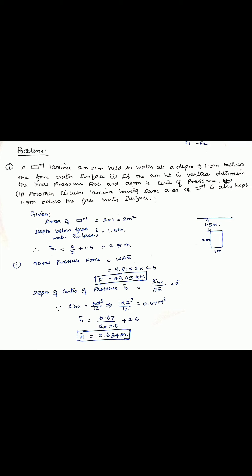First problem: a rectangular lamina 2 meter by 1 meter is held in water at a depth of 1.5 meter below the free water surface, with the 2 meter height vertical. Determine the total pressure force and depth of center of pressure. The second problem: a circular lamina having the same area as the rectangle is also kept 1.5 meter below the free water surface — determine the total pressure and depth of center of pressure.